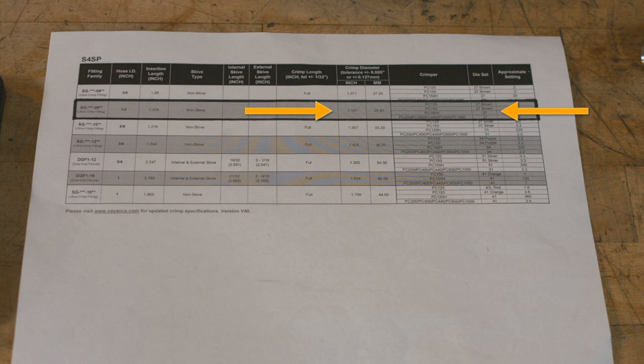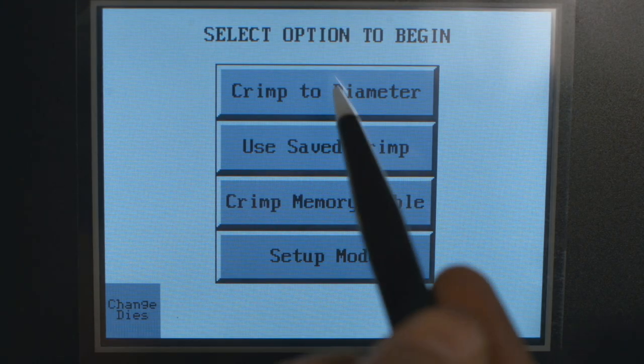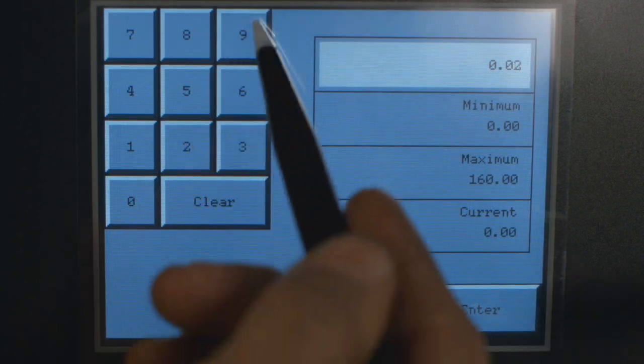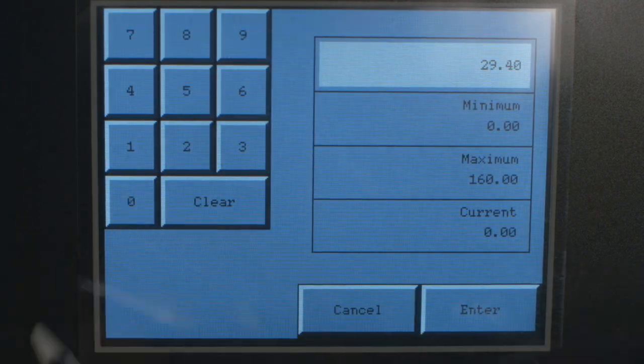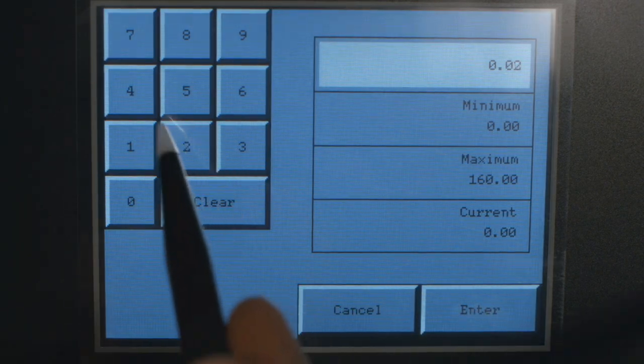Always select the die set closest, but smaller, to the diameter needed in millimeters. To begin, press Start on the ACT controller monitor and select Crimp to Diameter. Enter the finished crimp diameter and press Enter. Next, enter the close diameter of the die set in either inches or millimeters and press Enter.